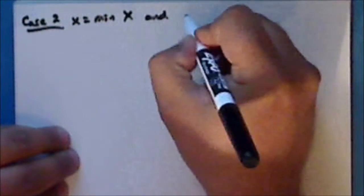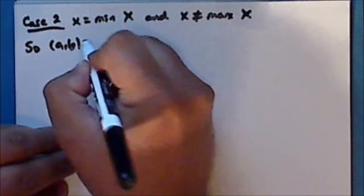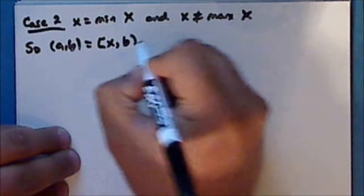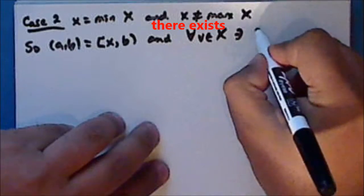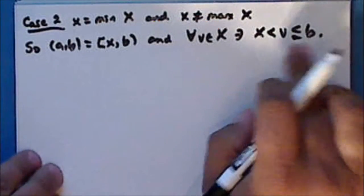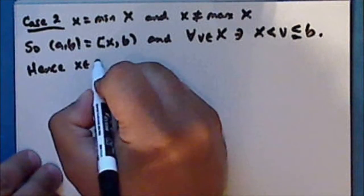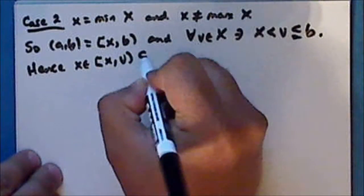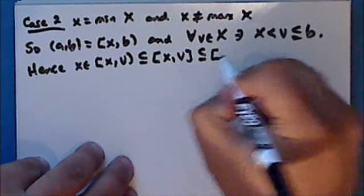Case two: the point x is the least element but is not the greatest element. In this case, the basis element is the half-open interval from x to b, and there exists an element v in X such that x < v ≤ b. We allow for the possibility that v is the greatest element. Hence the point x is in the half-open interval from x to v, which is contained in its closure, the closed interval from x to v, which is contained in the half-open interval from x to b.